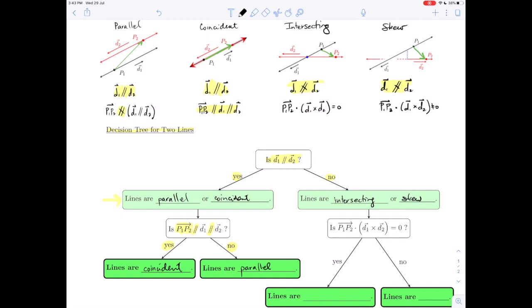Now on the other side of the tree, when our lines are intersecting or skew, the follow-up question involved the triple scalar product. We wanted to know, are the lines coplanar or not? Which is the same thing as asking, is the triple scalar product equal to zero or not? And if the triple scalar product is equal to zero, then those lines are intersecting.